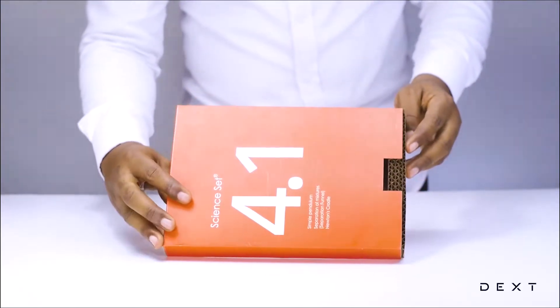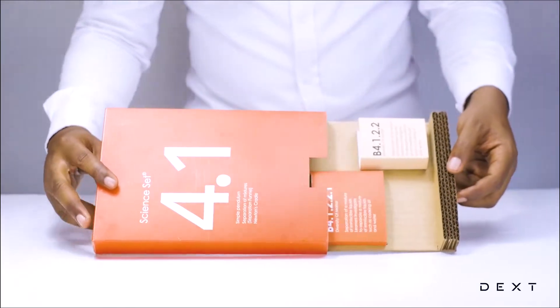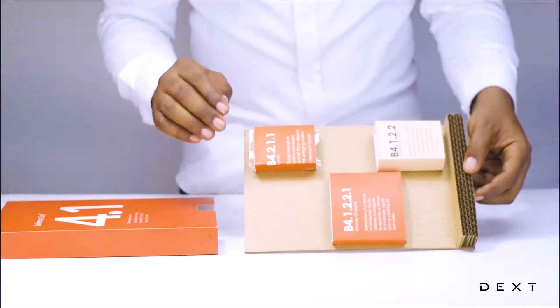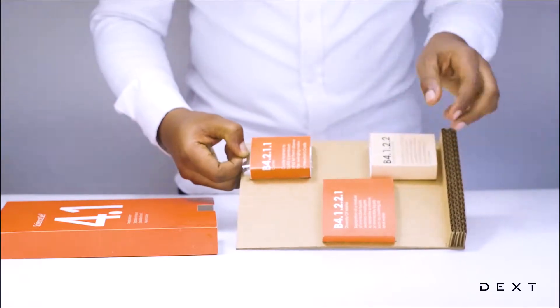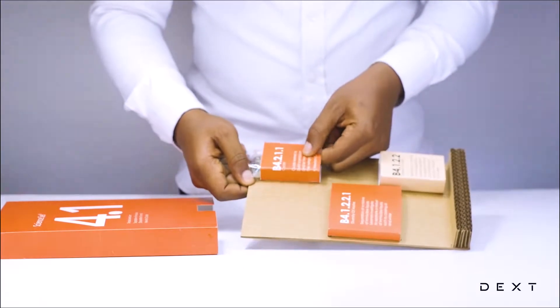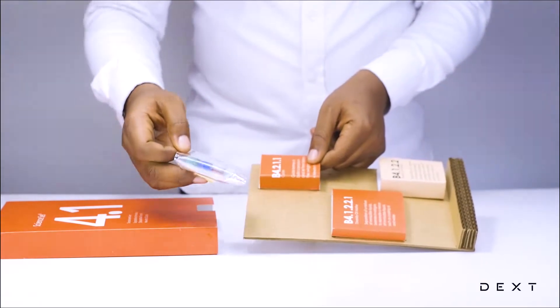we will build a simple pendulum to demonstrate how events reoccur in our environment by observing a swinging motion. The compartment B4.2.1.1 has the items that we will need to do this activity.